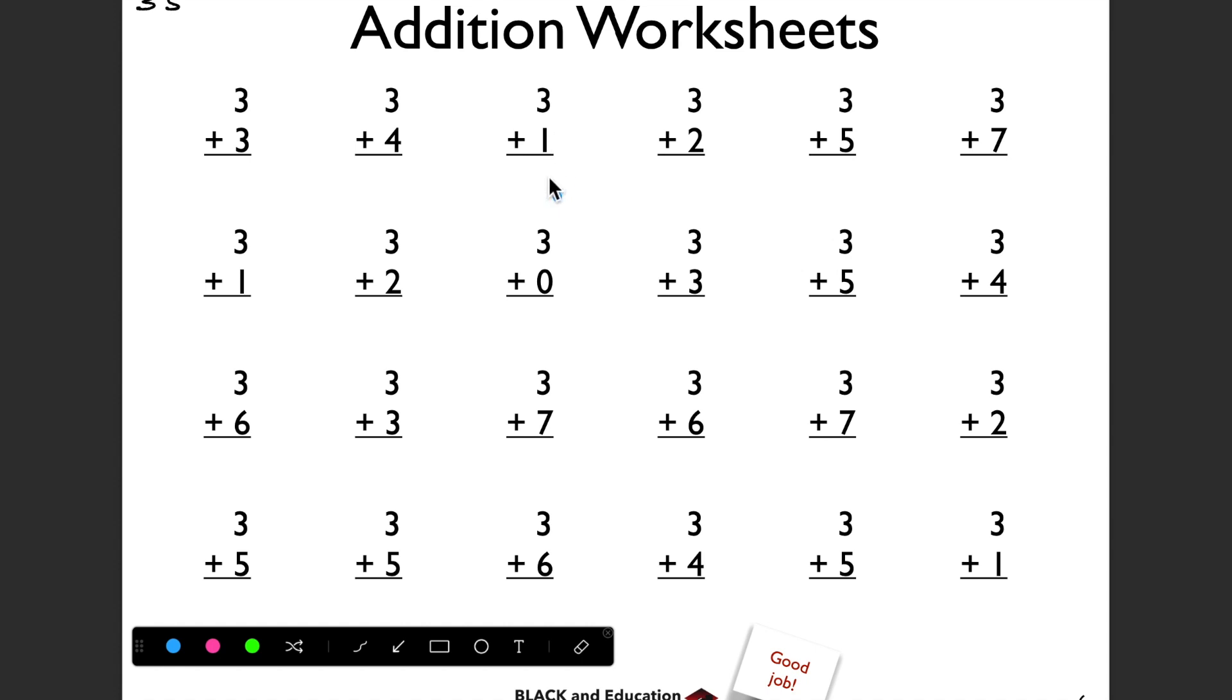Let's say if we had the problem here, 3 plus 1, what would that be automatically? As you probably know, that answer would be 4. Now, what if we have right here 3 plus 2? What would be the answer to that? You probably know that would be 5.